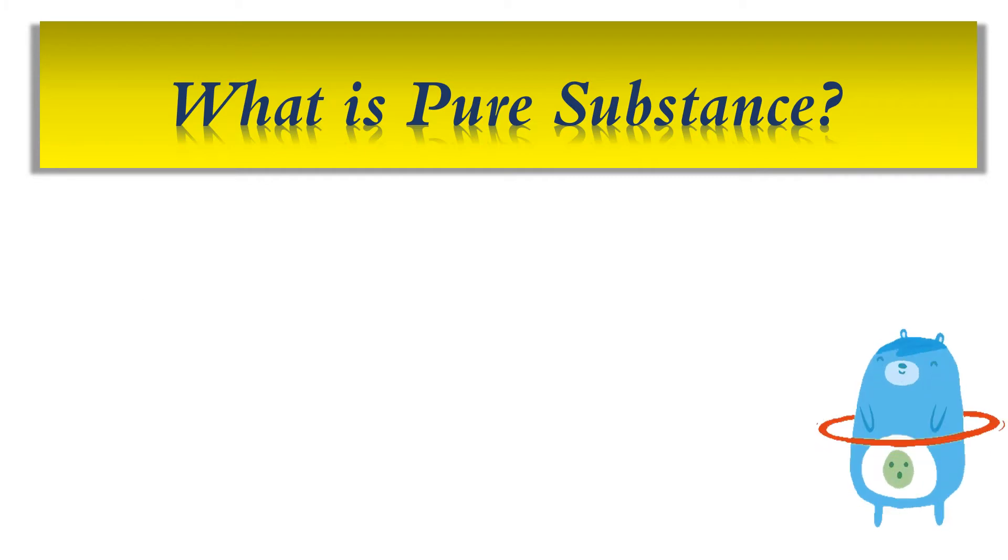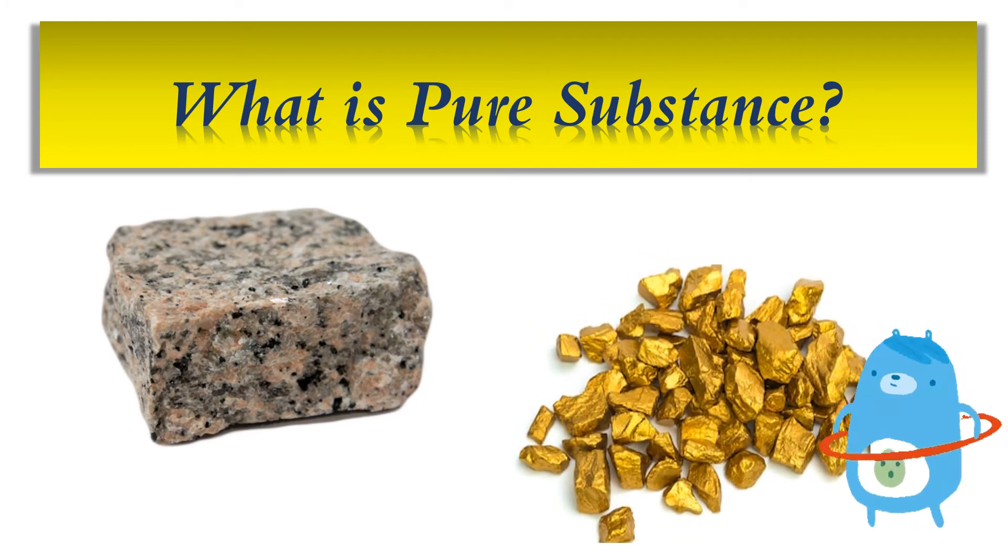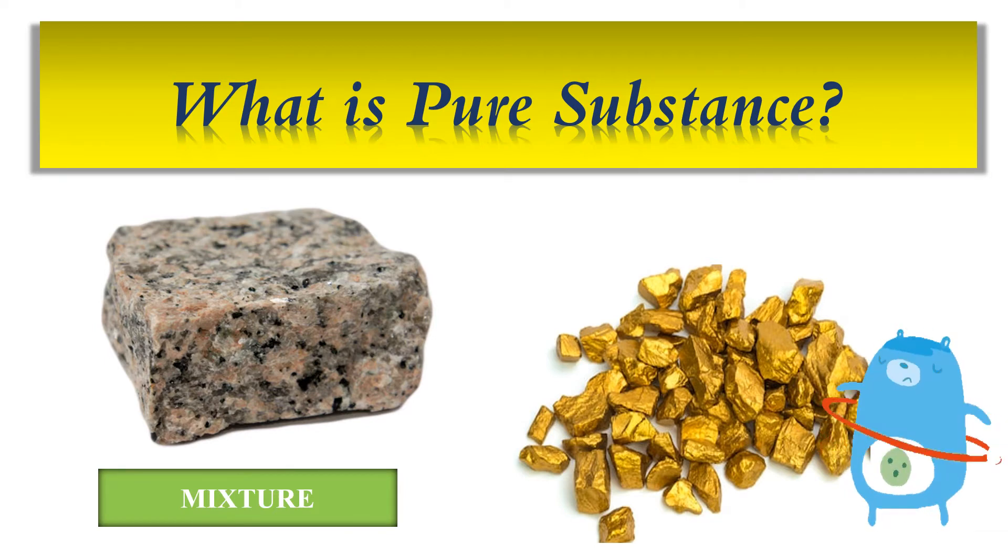Let's have a comparison. We have here granite and gold. Granite is an example of a mixture because it is made up of different kinds of minerals.